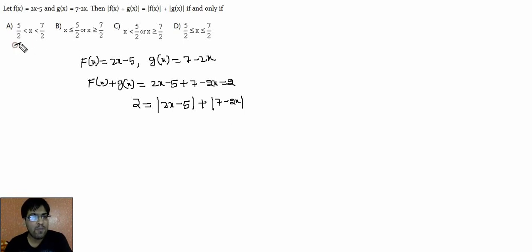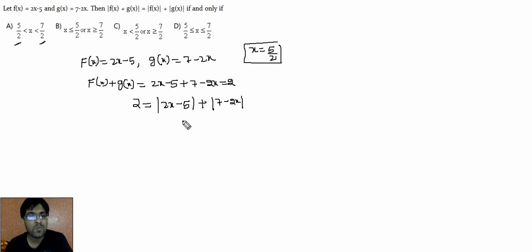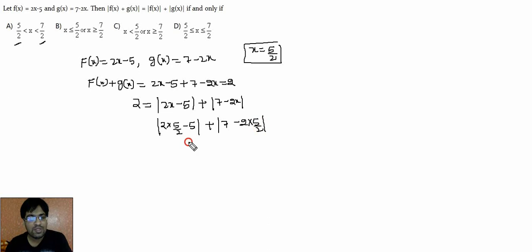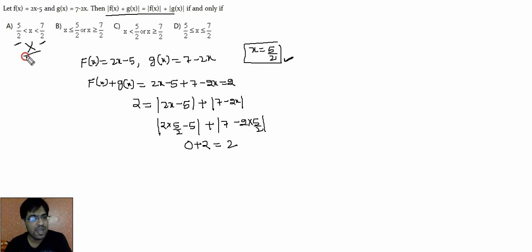Checking all options, the values 5/2 and 7/2 appear in all four options. So let's put x = 5/2 and check if this value satisfies the equation. Putting x = 5/2: |2(5/2) - 5| + |7 - 2(5/2)| = |0| + |2| = 2, which equals 2. So x = 5/2 satisfies the condition. This means options A and C are eliminated.